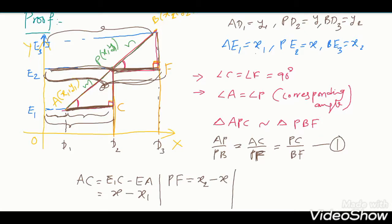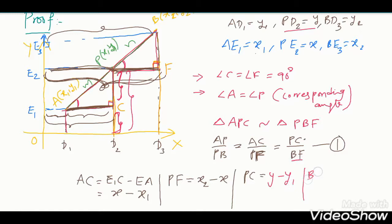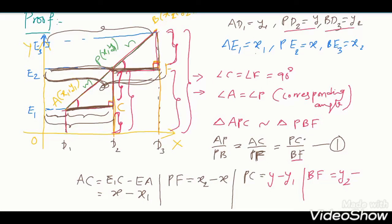Now find PC and BF. PC = PD2 − CD2. CD2 = AD1, so PC = y − y1. BF = BD3 − PD2. BD3 = y2, PD2 = y. So BF = y2 − y. All four unknown side lengths have now been found.